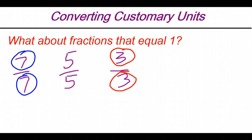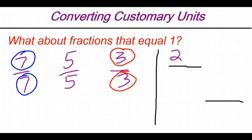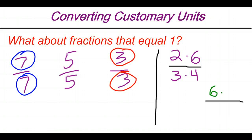We can come up with fractions equal to 1 by making sure the numerator and denominator represent the same value. If we have 2 times 6 in the numerator, that's 12. Well, 12 can also be represented as 3 times 4. So even though this fraction doesn't look like 1, 2 times 6 and 3 times 4 are both equal to 12 — this represents the same as 12 over 12. Or we could have 6 times 4 over 8 times 3: 6 times 4 is 24, and 8 times 3 is 24. They both represent the exact same value, so those fractions actually equal 1.